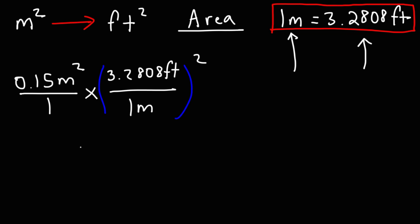Now I'm going to take this one step at a time. If we square this, what we're doing is we're multiplying 3.2808 feet by another 3.2808 feet. When you multiply feet by feet, you get square feet. And so this is going to be 10.76365 square feet.